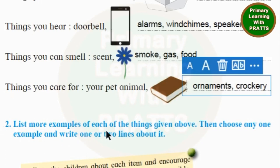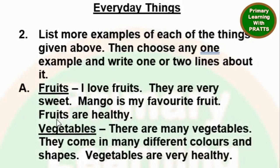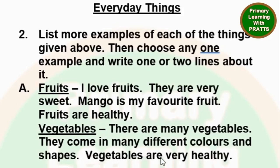Exercise 2: List more examples of each of the things given above, which we have already done. Then choose any one example and write one or two lines about it. For things we eat — Fruits: I love fruits, they are very sweet, Mango is my favorite fruit, fruits are healthy. Vegetables: there are many vegetables, they come in many different colors and shapes, vegetables are very healthy.